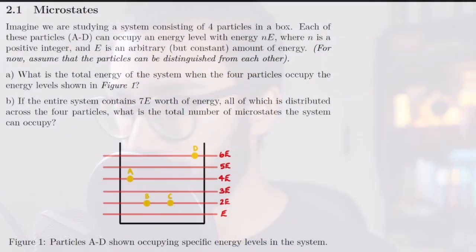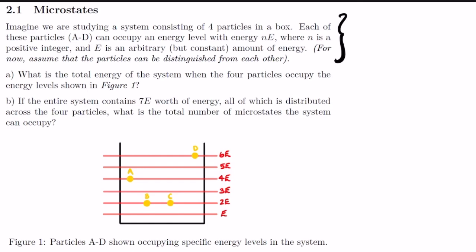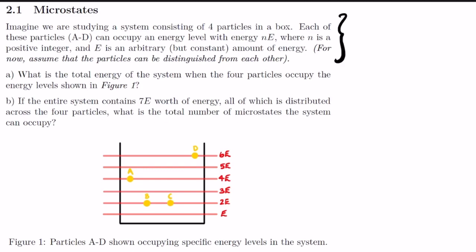This first question is designed so that we get used to working with particles in a box and the conventions I'm going to be using for the rest of this document. The energy levels are equal to n*e, where n is some positive integer — one, two, three, and so on — and e is just some constant amount of energy. The particles can be labeled a, b, c, and d, so we can tell which is which. From figure one, particle a is in the 4e energy level, particles b and c are in the 2e energy level, and particle d is in the 6e energy level.